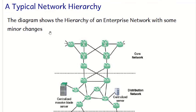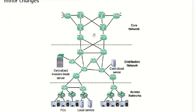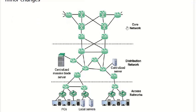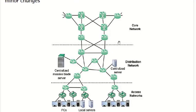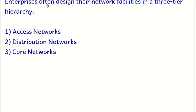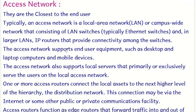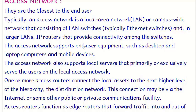This diagram shows the hierarchy of an enterprise network. It can be divided into three parts: the core network, the distribution network, and the access network. Enterprises often design their network facilities into this three-tier hierarchy: access networks, distribution networks, and core networks.